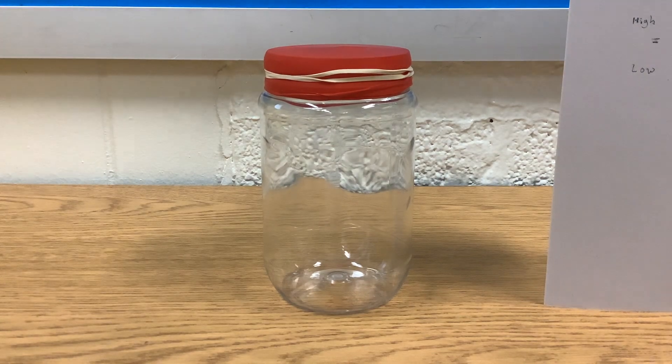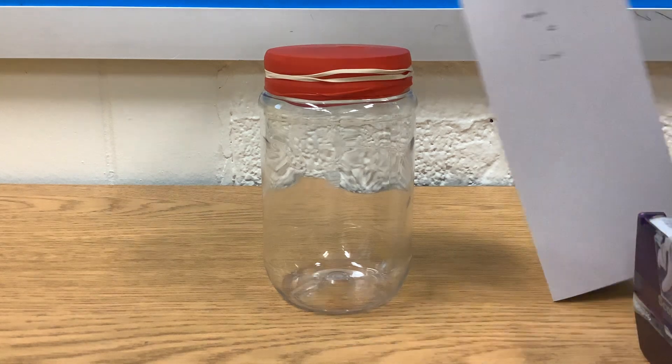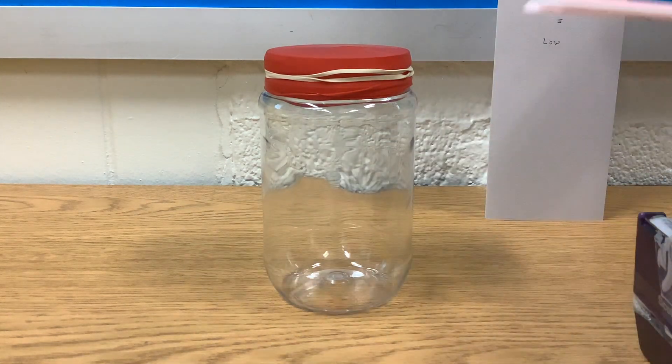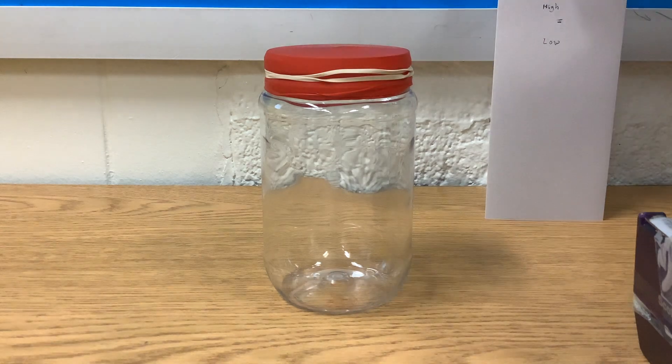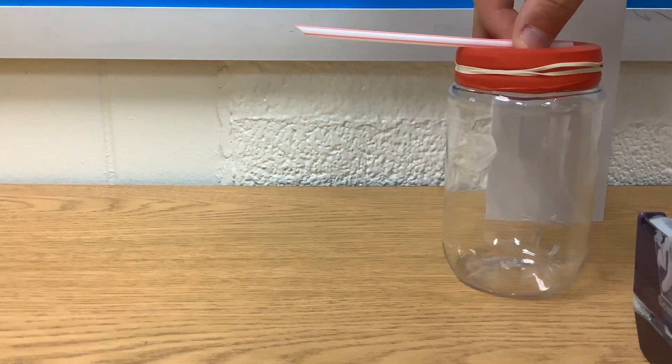We're going to come over here and grab a piece of tape. And then we're going to take our straw that we cut, and we're going to tape it to the top of our jar. So you want the pointy end sticking out away from the jar.